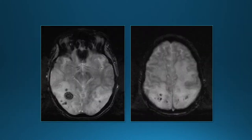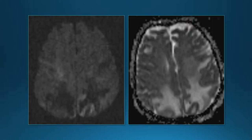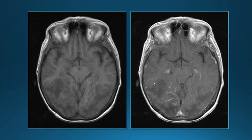Gradient echo images show scattered areas of hemorrhage. Diffusion-weighted images show that most of the abnormality has increased diffusion, although there's a little bit of restricted diffusion in the cortex. On pre- and post-contrast images, there is a little bit of linear enhancement, but not very much.